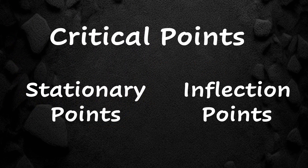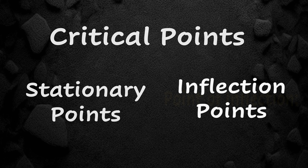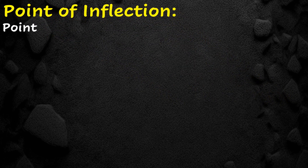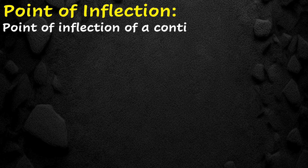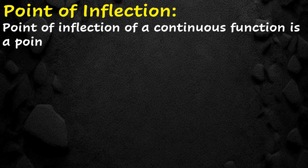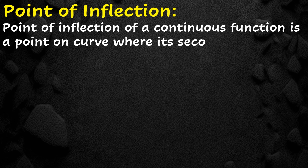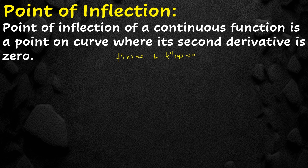Now we discuss the point of inflection. A point of inflection of a continuous function is a point on the curve where its second derivative is zero. The first derivative gives stationary or critical points, but the second derivative gives precisely the points of inflection.